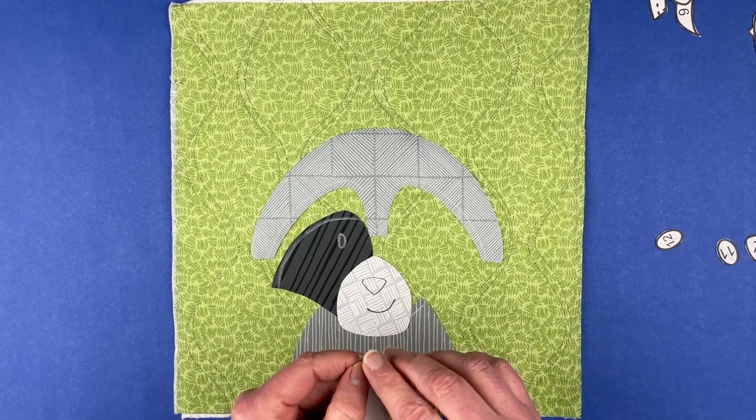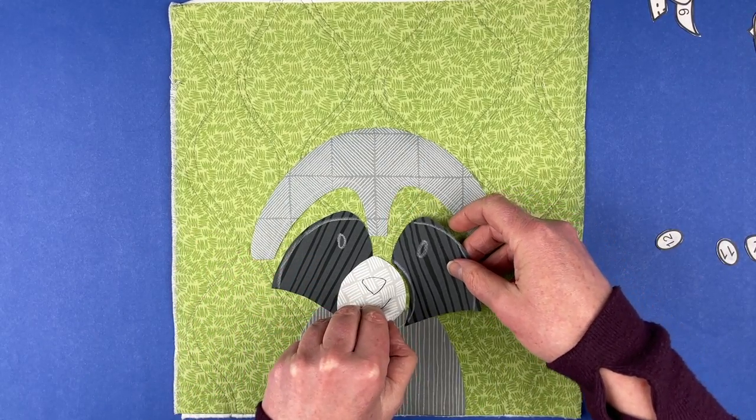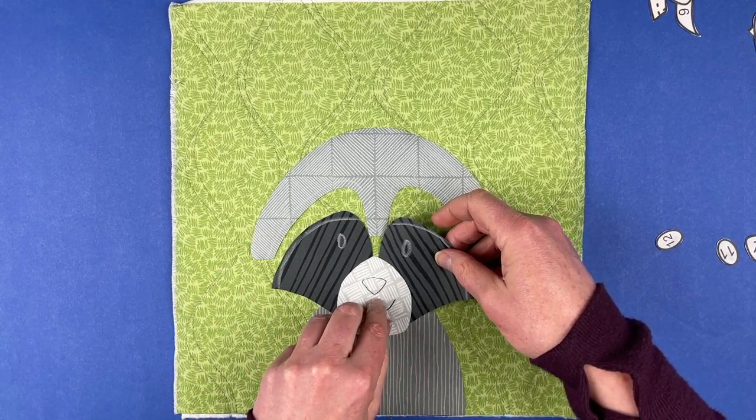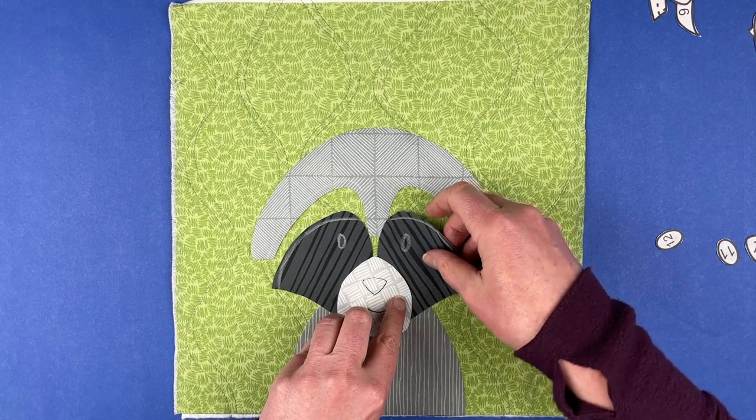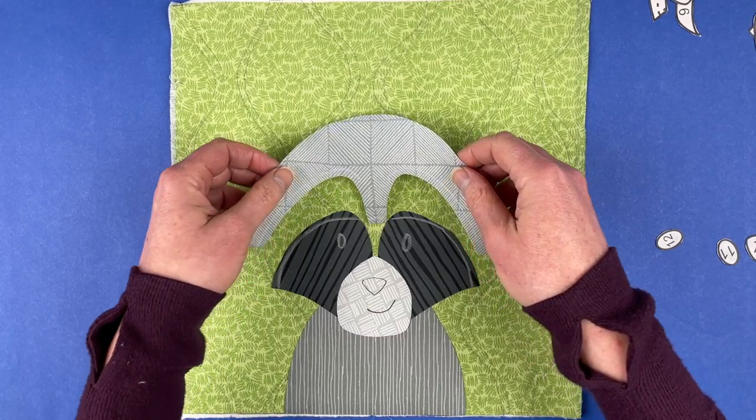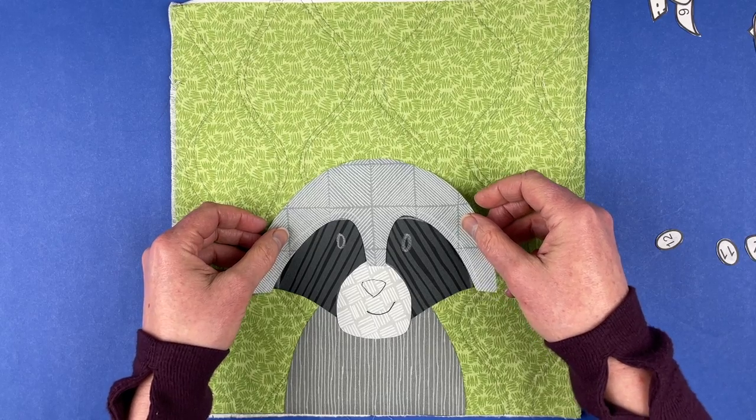Let's do the same thing on the other side. Tuck that behind the muzzle and on top of the shoulders. And that's going to be good. Now we can take this guy and shift it down. So he's going to sit on top of the eye patches.